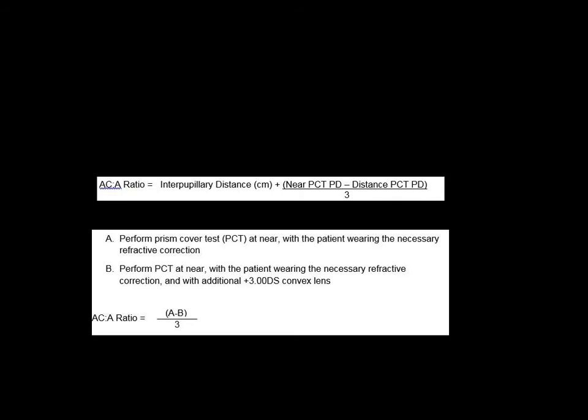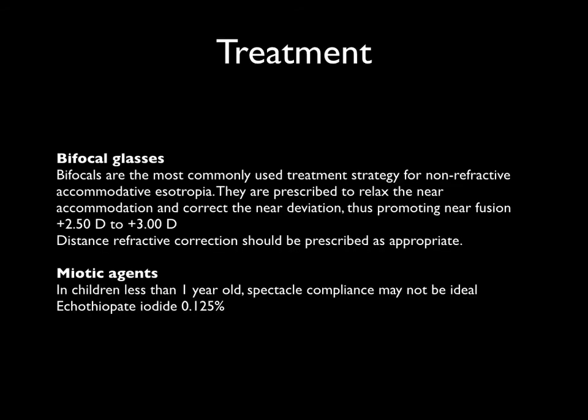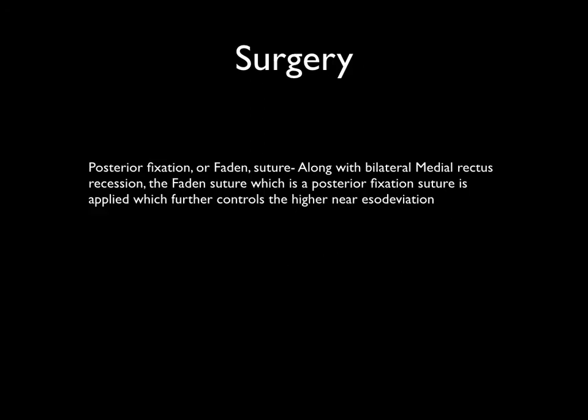The AC/A ratio can be calculated using two methods: the heterophoria method and the gradient method. The preferred practice to treat high AC/A ratio or non-refractive accommodative esotropia is to prescribe bifocal glasses, with a near add of around plus 2.5 to plus 3. The child is reviewed at one month with squint measured for distance and near. In very young children less than one year old, spectacle compliance may not be ideal, and some practitioners prescribe ecothiophate iodide 0.125%.